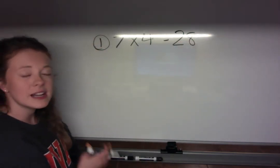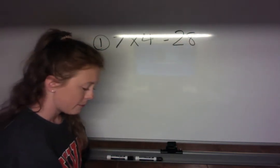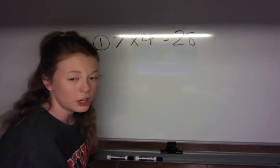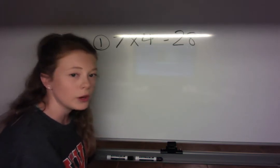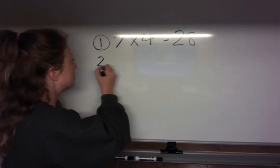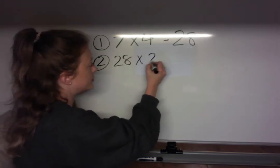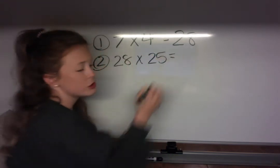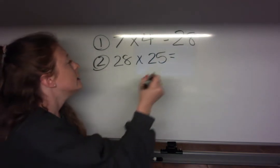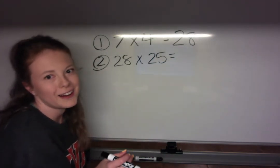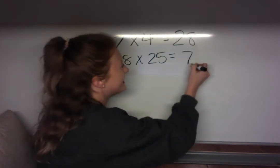Now it says that I was paid $25 per hour that I worked. So I know that I worked 28 hours, and I was paid $25 per hour. So when I do that math, I did it in my calculator beforehand, 28 times $25 equals $700.